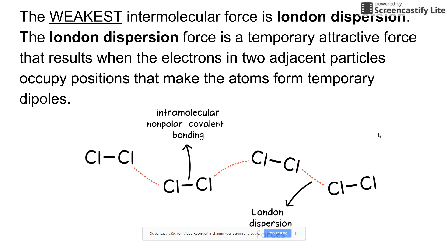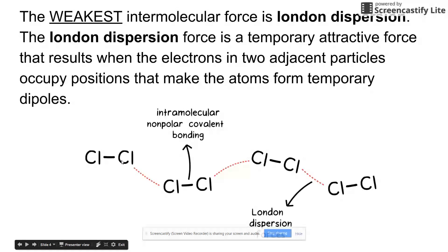The weakest is known as London dispersion forces. The London dispersion force is a temporary attractive force that results when the electrons in two adjacent particles occupy positions that make the atoms form temporary dipoles. Down here, as you can see, there are chlorine molecules. There's no electronegativity difference between the two chlorine atoms that make up the molecule, so the bond electrons are more or less shared equally. But at any given moment, these two electrons could be found over on one side, and then you'd have a partial negative charge as a result, and then a partial positive.